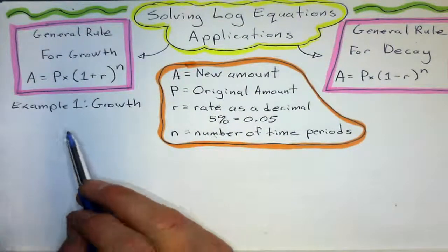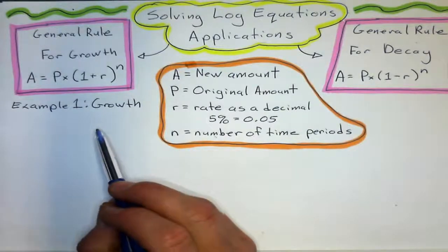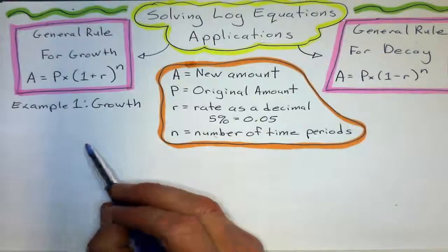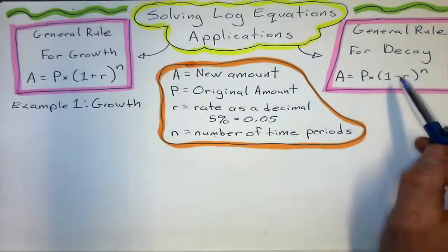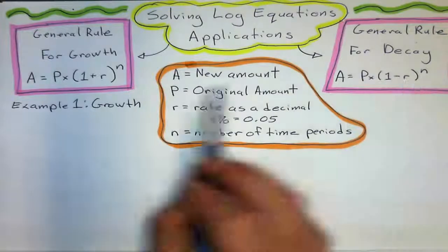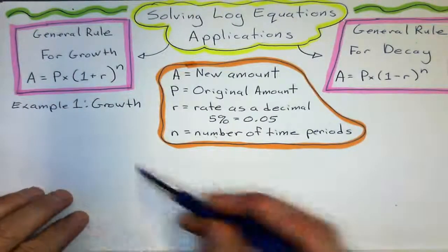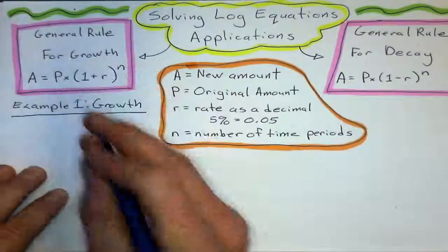And the difference between growth and decay. Growth is consecutive percentage increases. And decay is consecutive percentage decreases, hence the minus for decay and the plus for growth. So, my first example is going to be one of these.